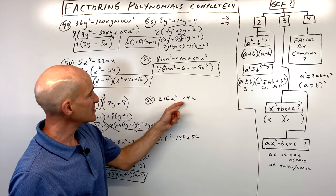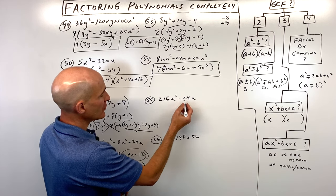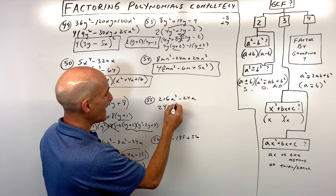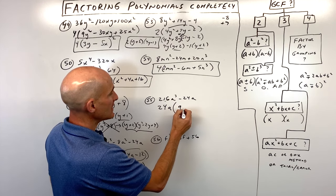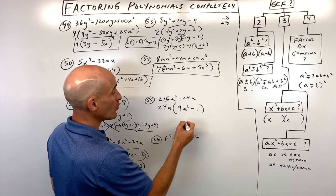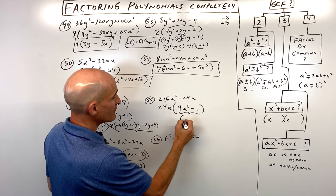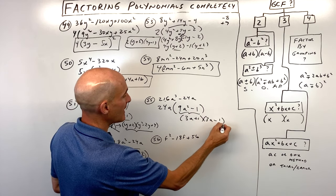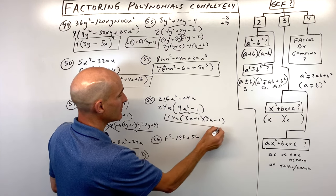Number fifty-five has a greatest common factor of 24a. Factoring that out gives 24a times 9a squared minus 1. This is a difference of two squares, so factor as 24a times 3a plus 1 times 3a minus 1.